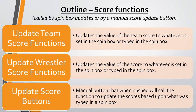The update score function works similarly, except instead of entry boxes it uses spin boxes — those counter-type boxes with up and down arrows. You can choose the score with the arrows or type it in. When you use the spin box arrows it updates automatically; however, if you type in the score manually you have to hit the update score button, which manually calls the function to get the value, store it in the global variable, and then call the update text files function.